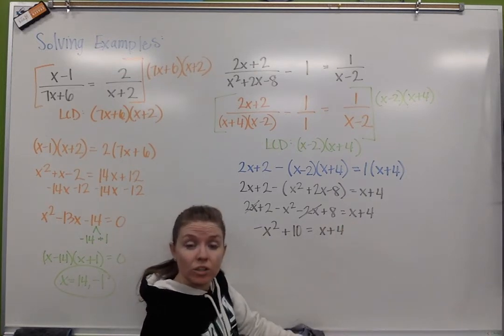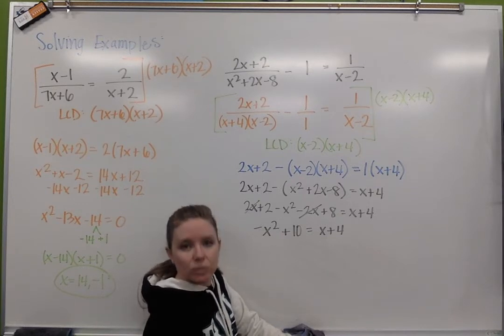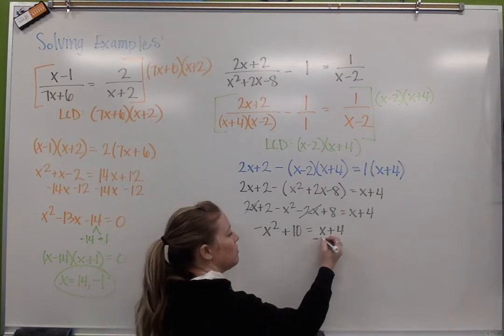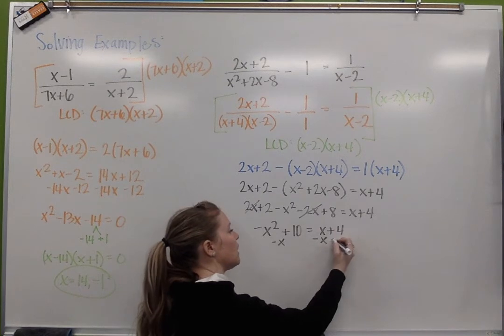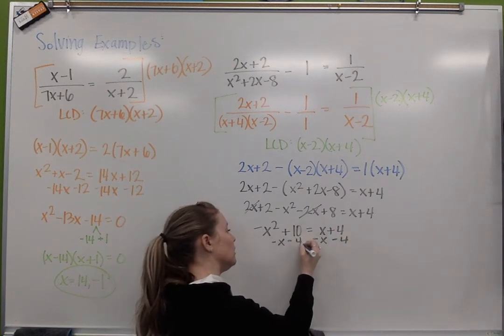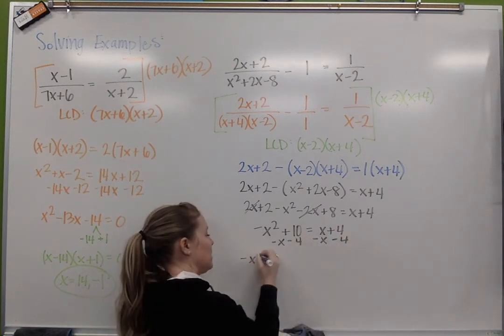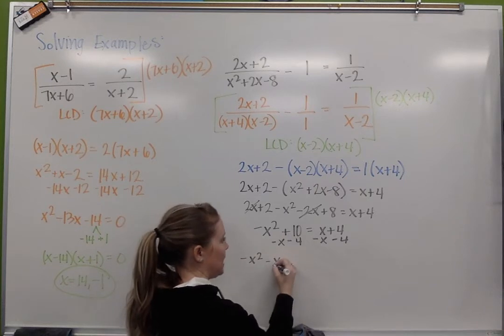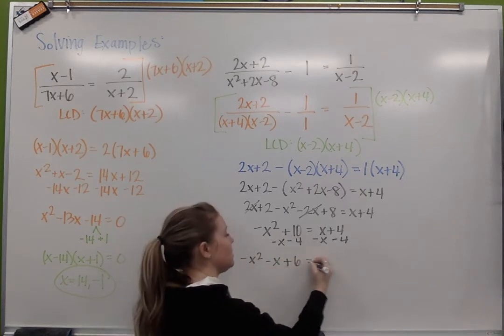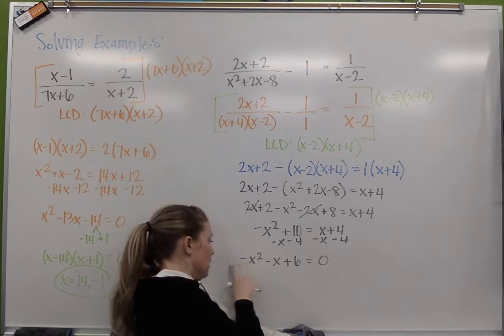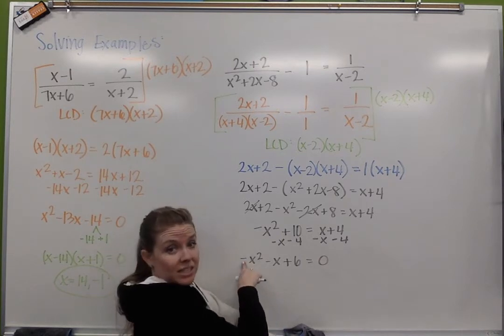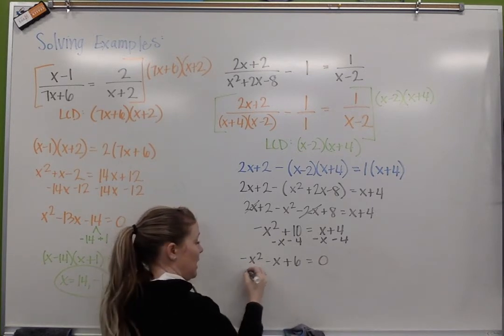So again, I'm left right here with this x squared, which means I'm dealing with a quadratic. Again, we've got to set it equal to 0. So I'm going to minus the x over and I'm going to minus the 4 over, and I end up with negative x squared minus x plus 6 equals 0.